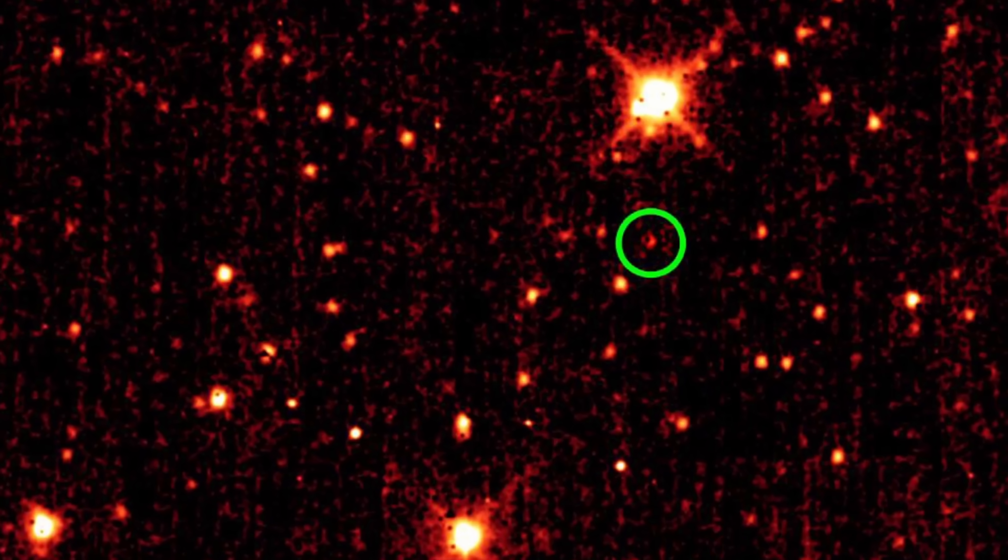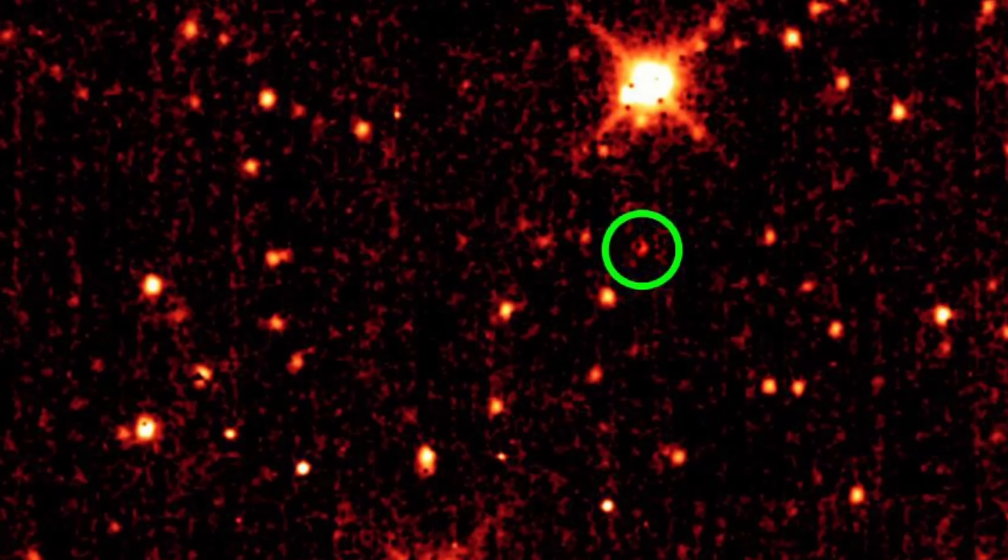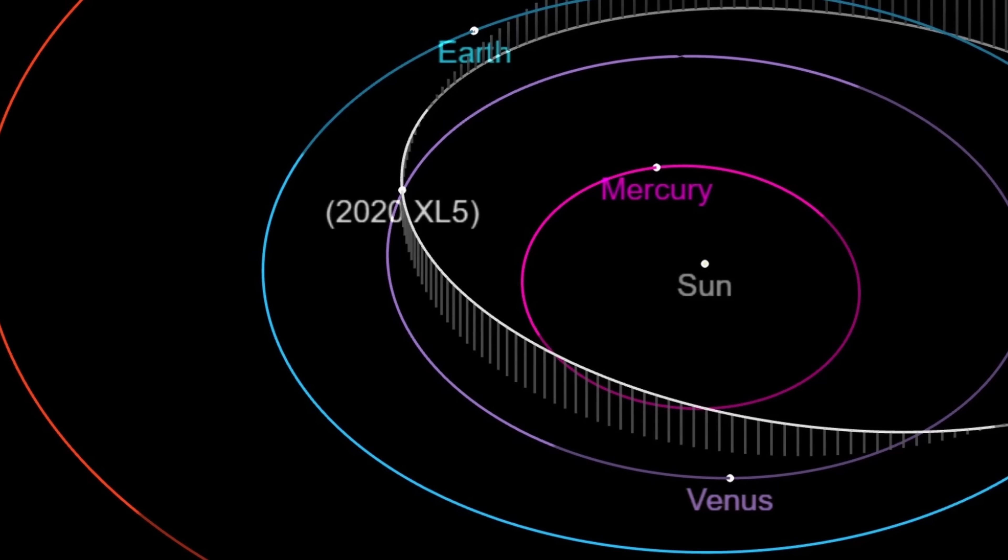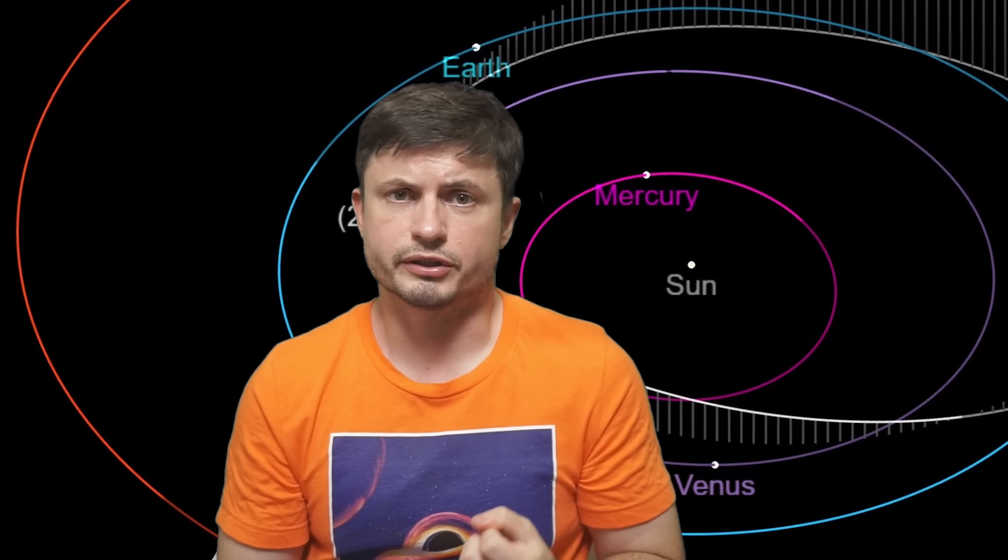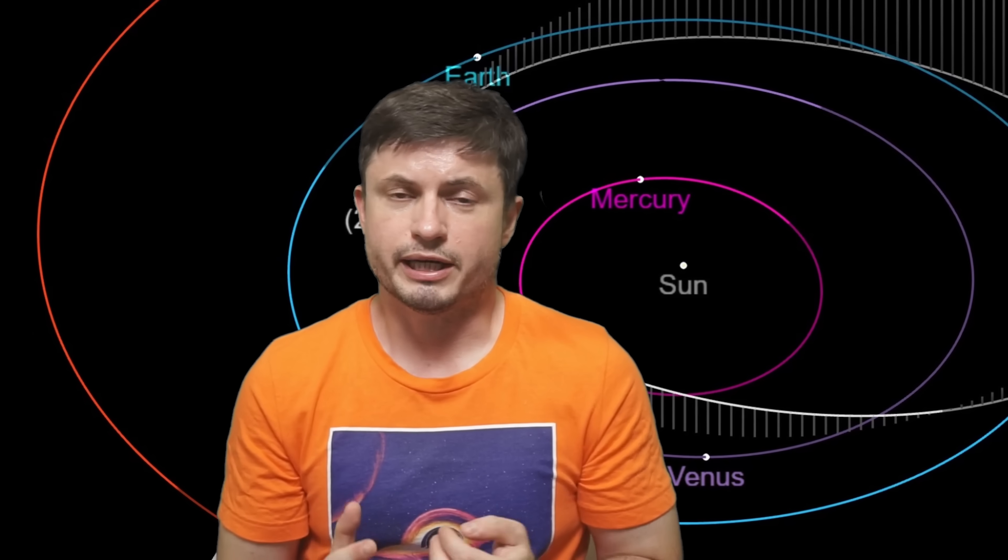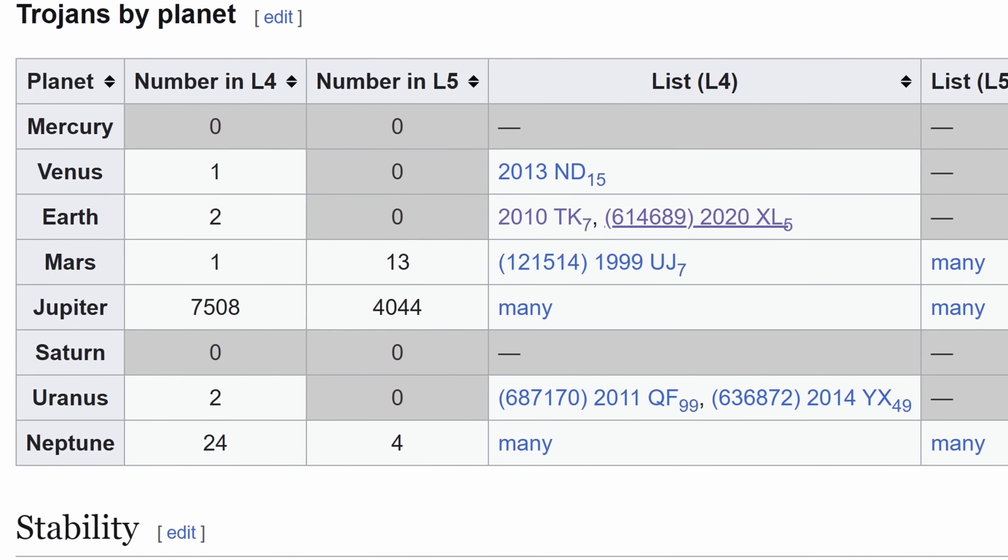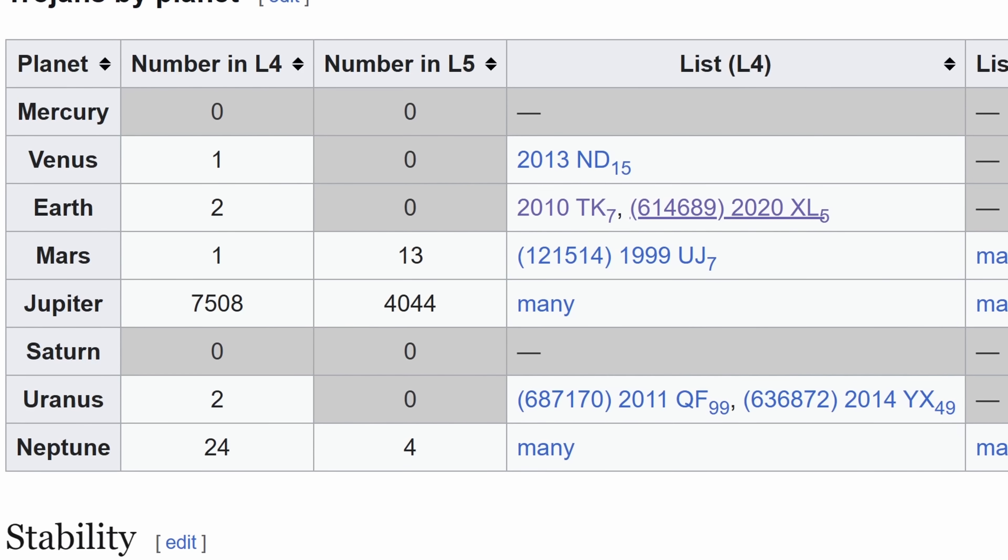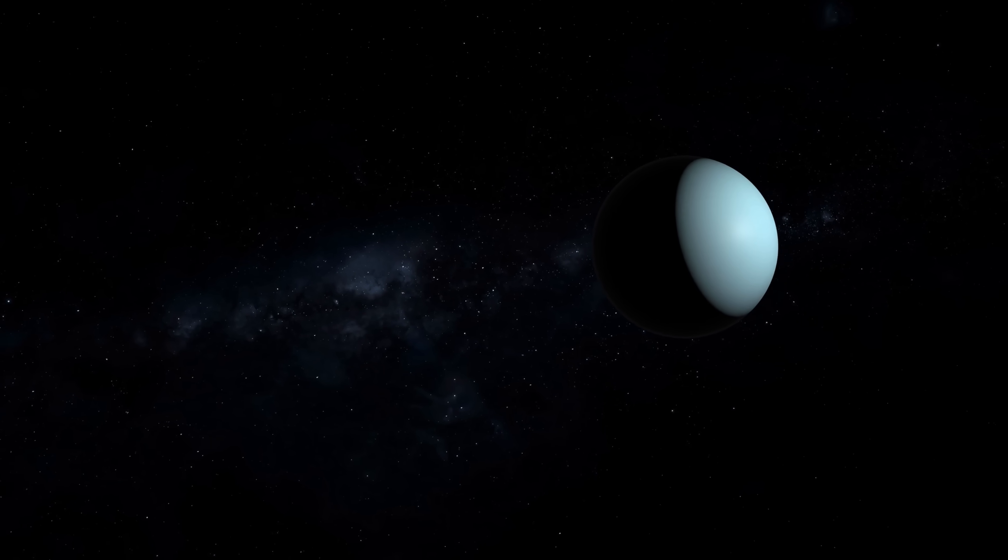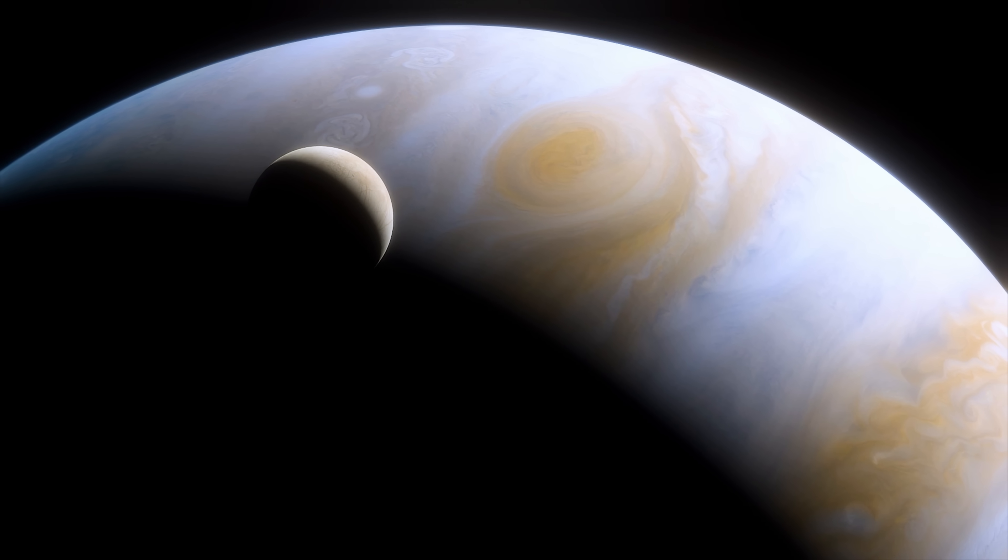For example planet Earth currently has at least two separate Trojans. 2010 TK7 that you see right here and 2020 XL5. By definition both of these are Trojans or basically captured asteroids that now share their orbit with planet Earth. And as you can see from this table right here, almost all planets have Trojans. Mars has them. Venus has them. Uranus and Neptune have a bunch too. Actually possibly a lot more that we haven't discovered yet, simply because it's a little bit difficult to see those objects. And Jupiter has a lot. Like a lot. Thousands identified and potentially millions still hiding.